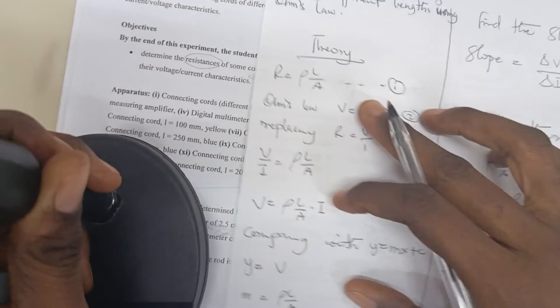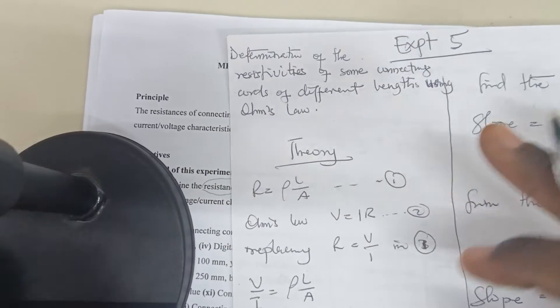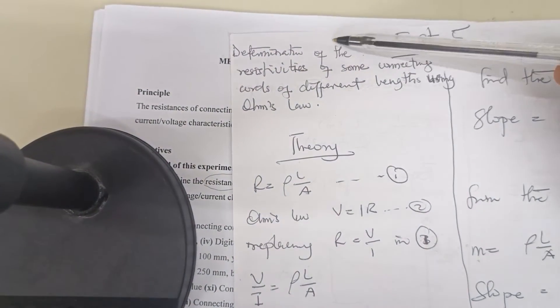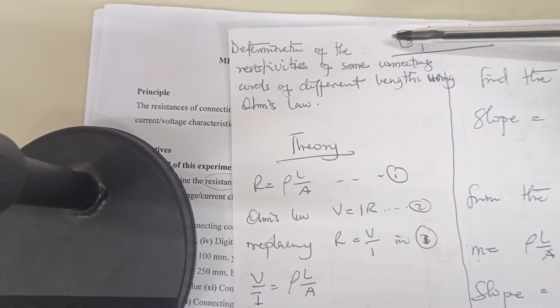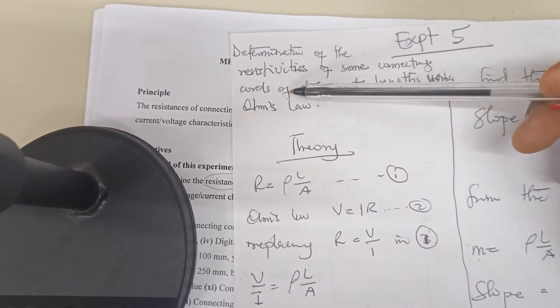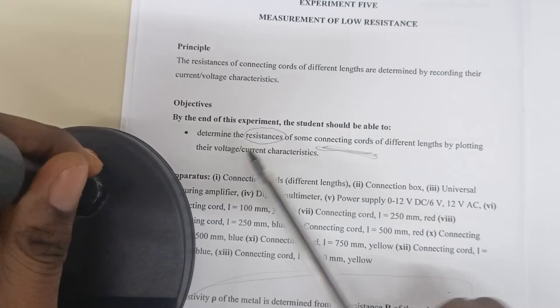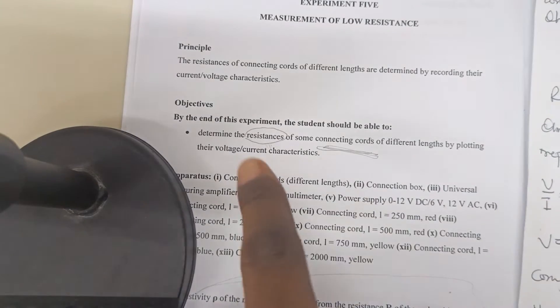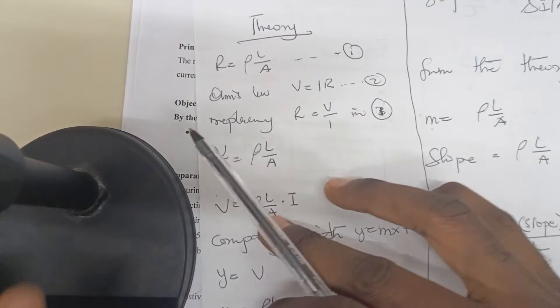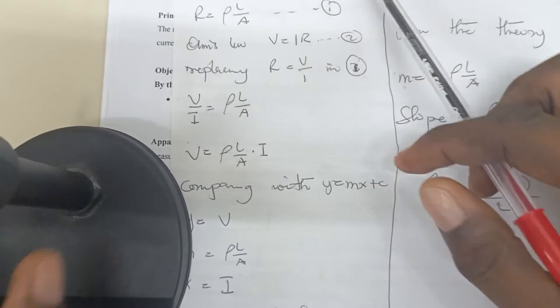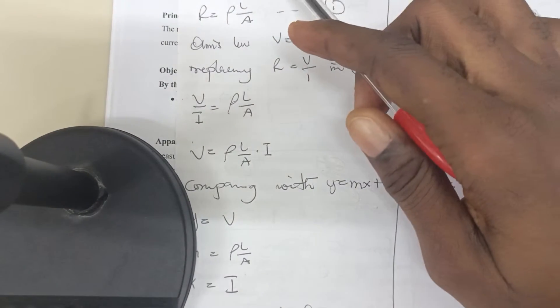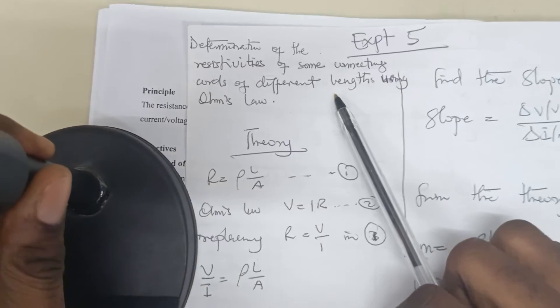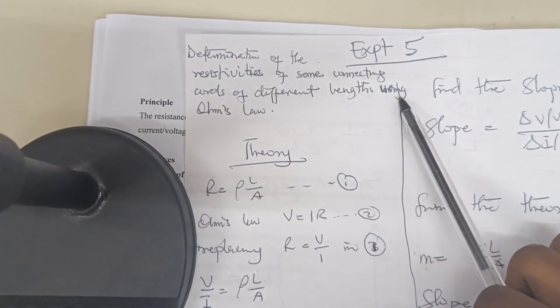Let's look at the title. Our title is supposed to be the determination or measurement of resistivities of some connecting cords, because that's what they say we should find. The objective is to find the resistivities of some connecting cords of different lengths. There is a mistake here in the book.